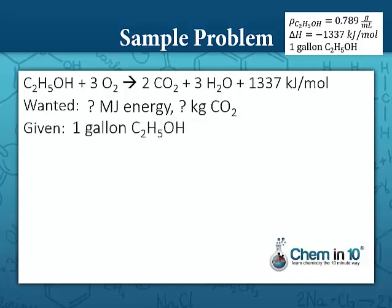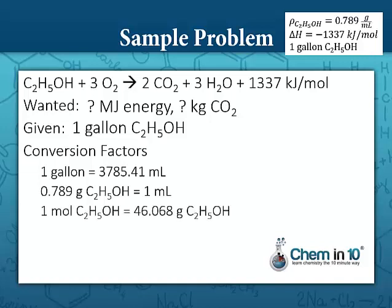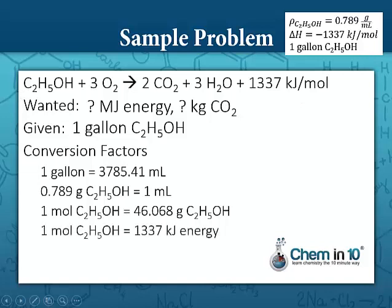We're given one gallon of ethanol, and we need to convert that to megajoules of energy. First, we convert gallons to milliliters — one gallon is 3,785.41 milliliters. Then we convert milliliters to grams using the density of ethanol, 0.789 grams per milliliter. Then grams to moles using the molar mass of ethanol, 46.068 grams per mole. And then moles of ethanol to energy: since the coefficient is one, one mole of ethanol produces 1,337 kilojoules of energy.